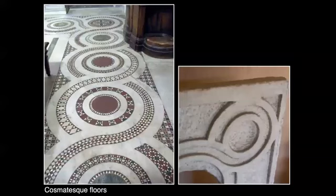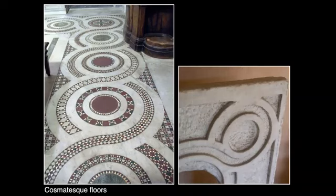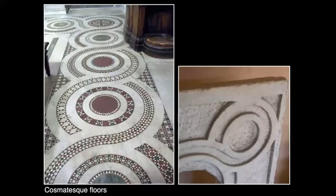By the 12th and 13th centuries, the Cosmati family were creating beautiful architectural details and flooring for the churches of Rome out of broken pieces of Roman marble. The white marble was more plentiful; the large colored slabs had already been used. So the Cosmati family cut the colored marbles into small pieces and laid them out in these kaleidoscopic patterns, inset into incisions in the white marble, which made a great floor slab for the church and created the decorative patterns we see here.